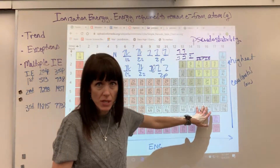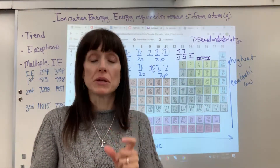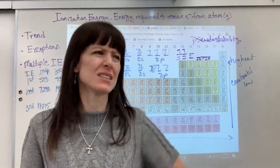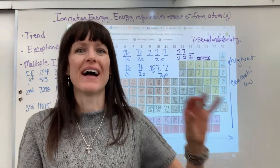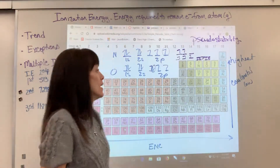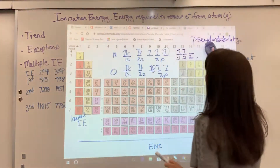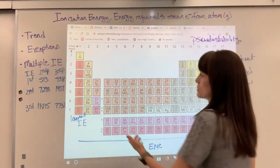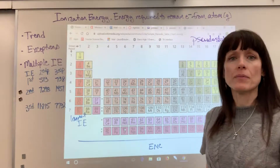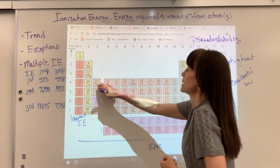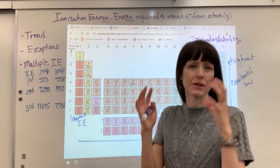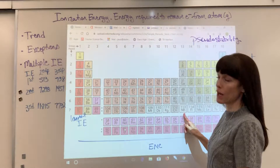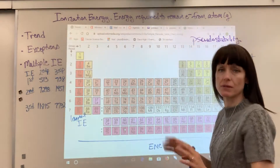So there's the first exception. Your buzzword for a test is pseudo-stability of a half-filled subshell — one electron in every orbital. The second place we're going to see pseudo-stability is a classic comparison between group 2 and group 13. When we're looking at valence electrons, we skip the d-block because it's always one energy level lower and won't be considered the valence shell. This applies to all of group 2 and all of group 13.